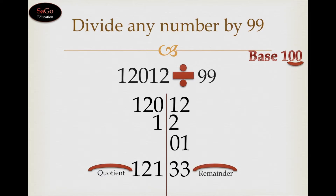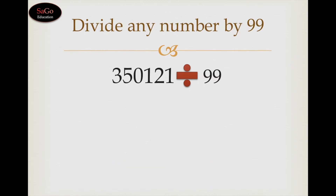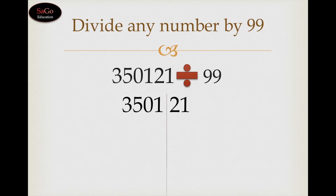On the left hand side we have got our quotient part and on the right hand side we have got our remainder part. 121 is the quotient and 33 is the remainder. Let's take one more sum: 350121 divided by 99. Write down the dividend as it is, put a slash before the last two digits which is 21, because the nearest base of 99 is 100 and there are two zeros in the base 100.